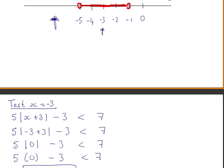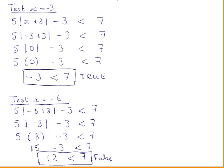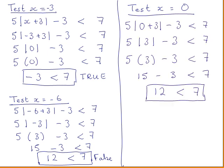We will try another value that is not part of our solution set — a value greater than minus 1. We will test x equals 0. When substituted into the original inequality, we get that 12 is less than 7, which is false, as expected because 0 is not part of our solution set.